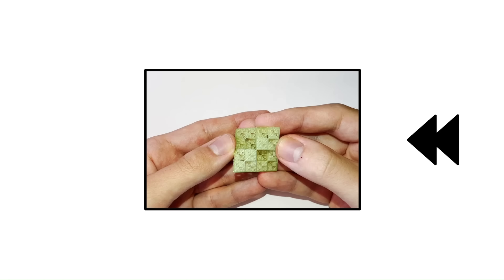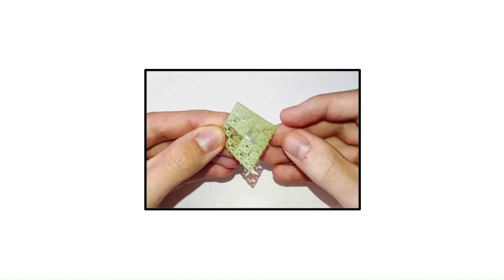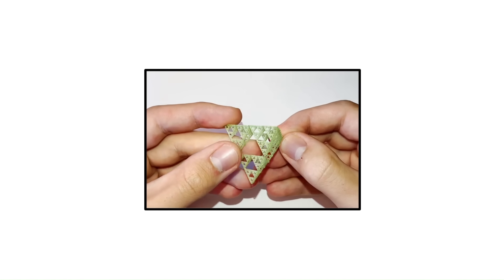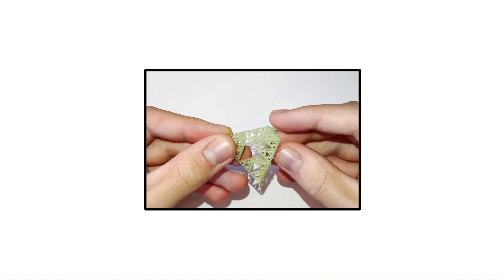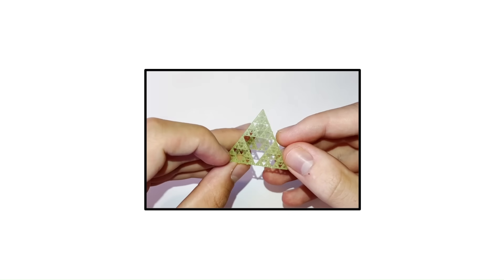Let's rewind and see that again. Well, there are no camera tricks. This shape really does look like a solid square from some angles, even though it's mostly hollow and looks see-through from other directions.